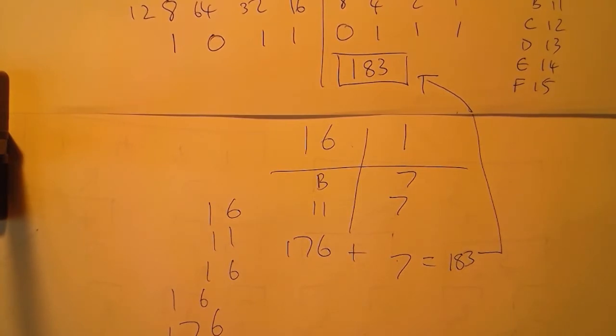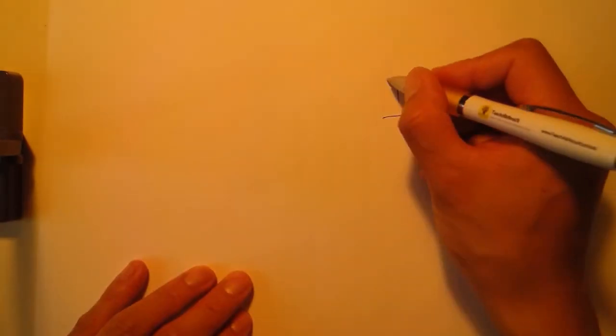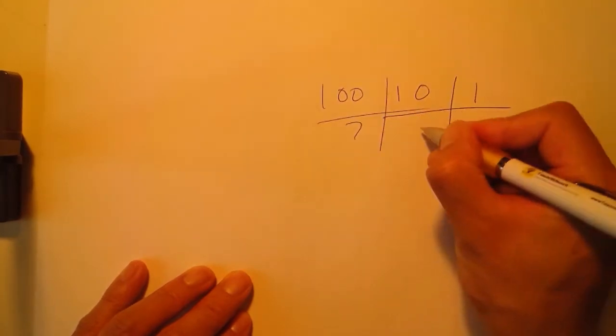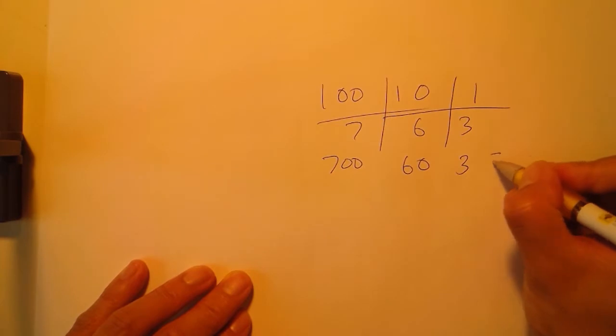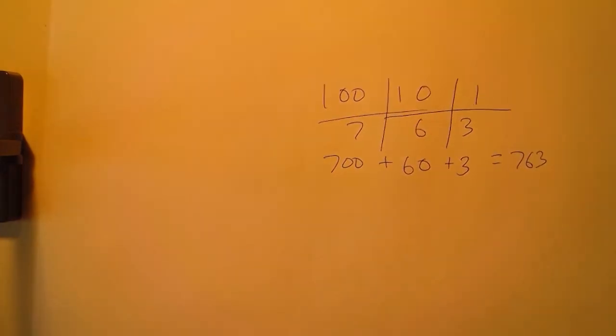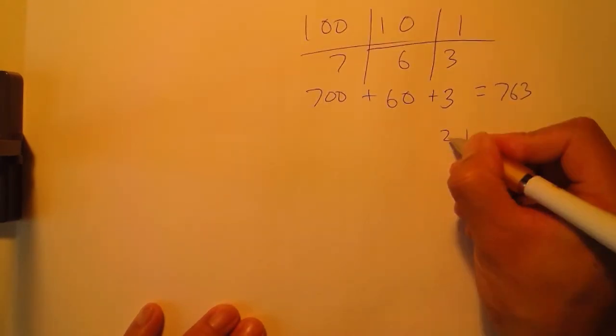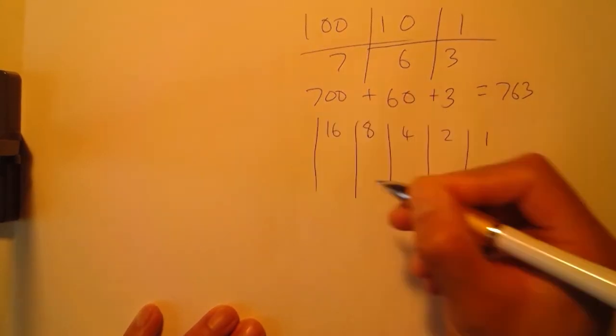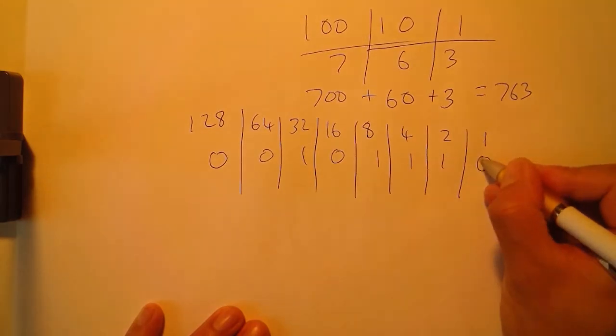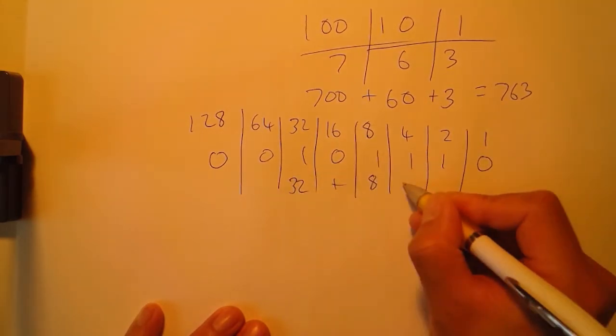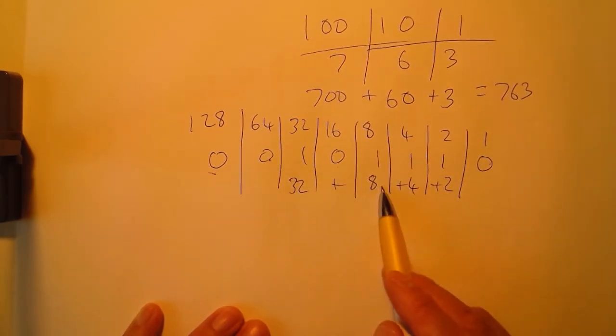To summarize, our number system that we use every day is base 10. The way that actually works is for every base we're just multiplying: 1 times 3 is 3, 6 times 10 is 60, 7 times 100 is 700, so that equals 763. Binary is no different, just that the bases go up in order of 2: 1, 2, 4, 8, 16, 32, 64, 128. When we've got a value, all we're doing is taking the 32, adding that to 8, adding that to 4, adding that to 2, which equals 46.